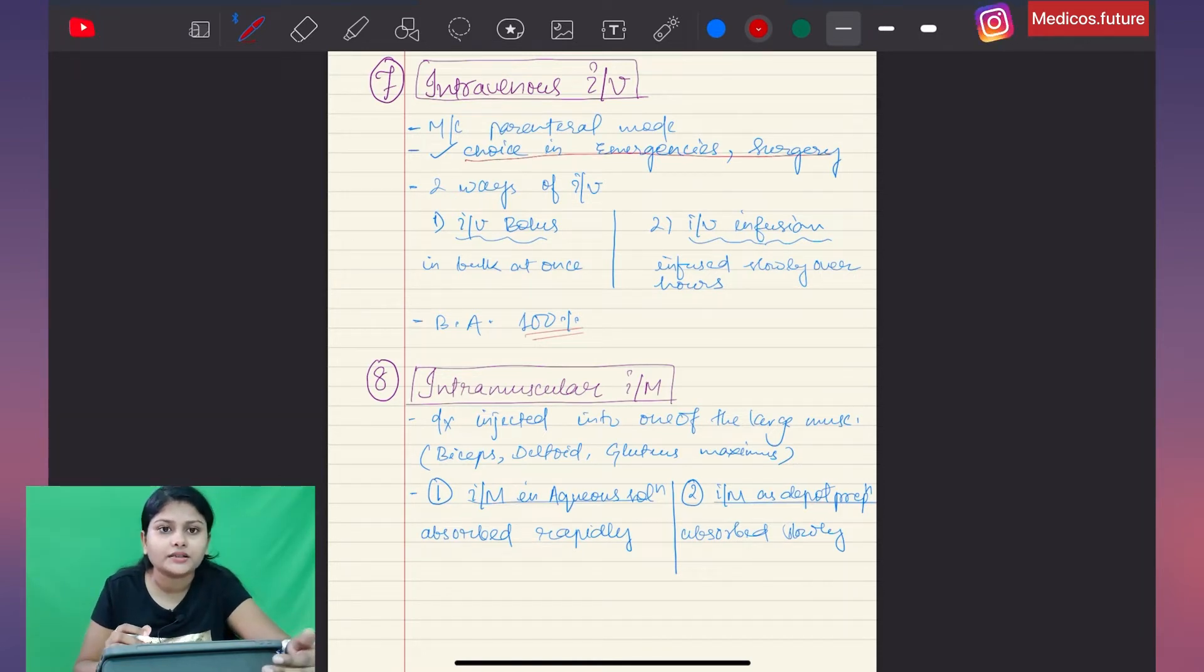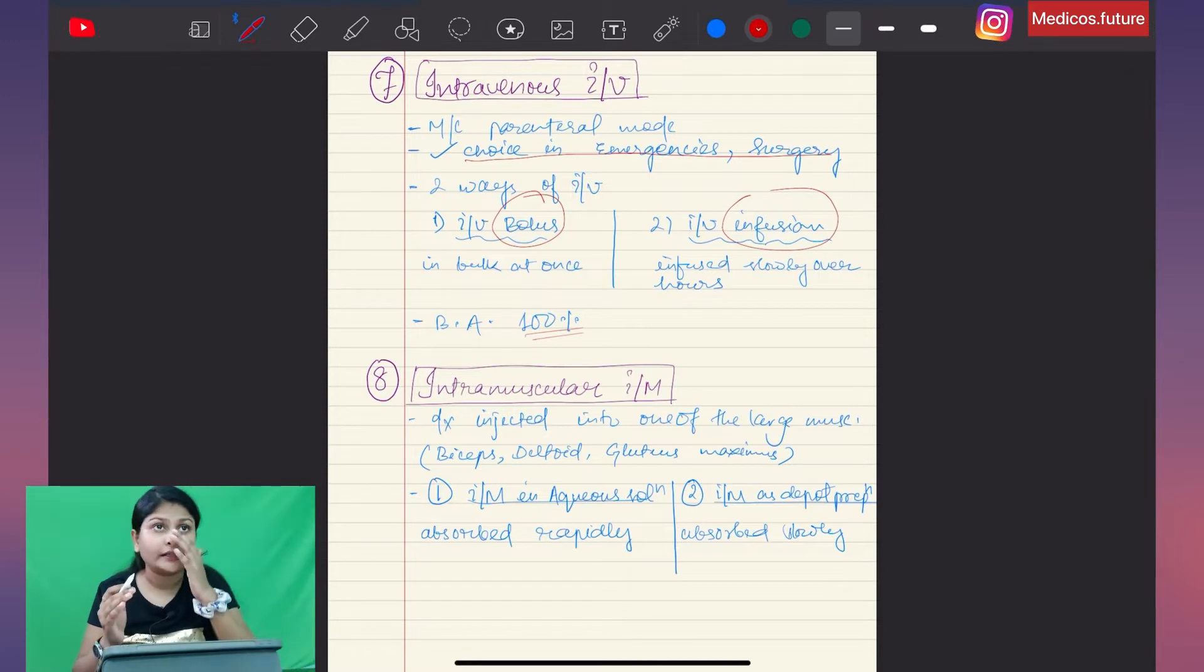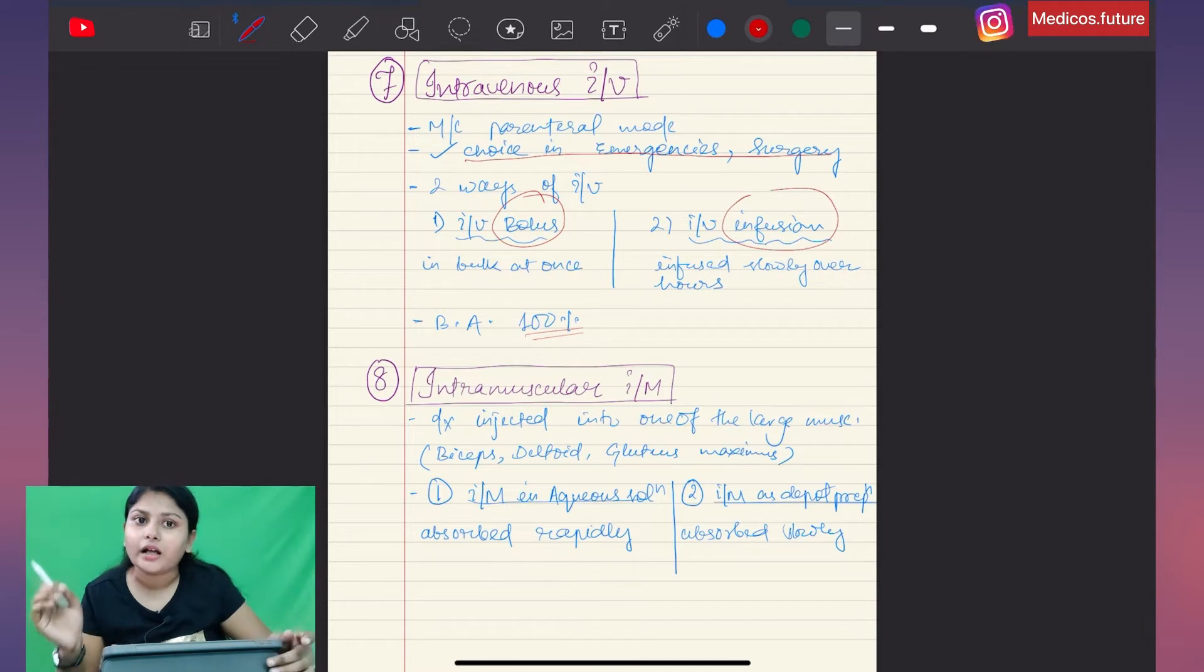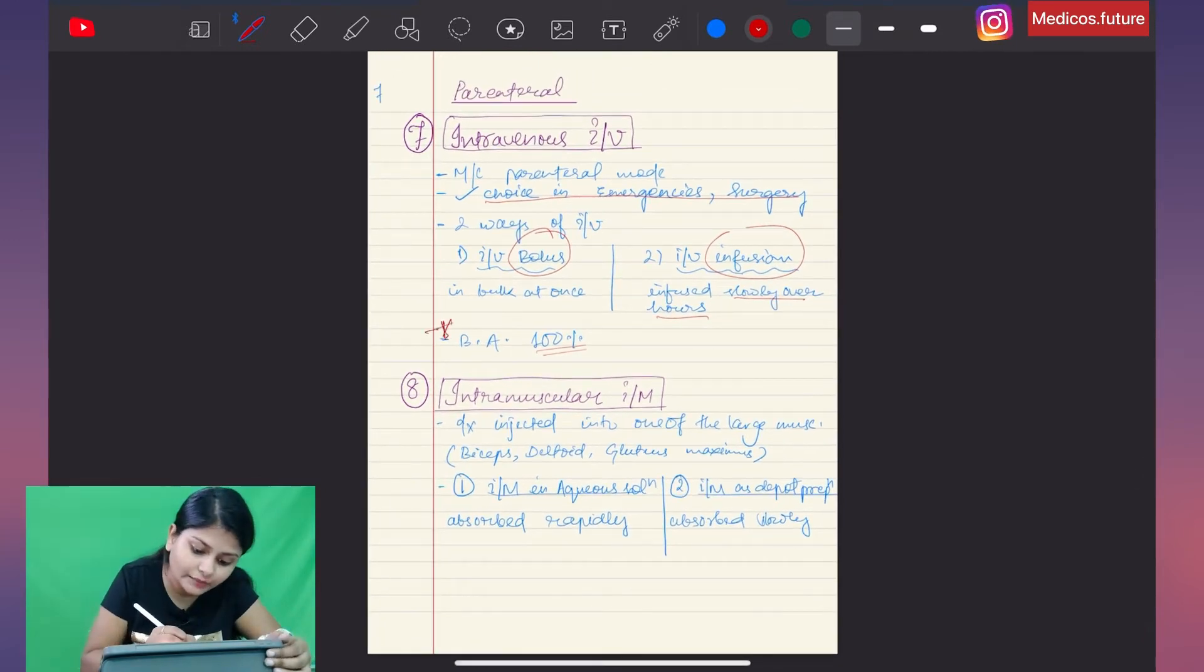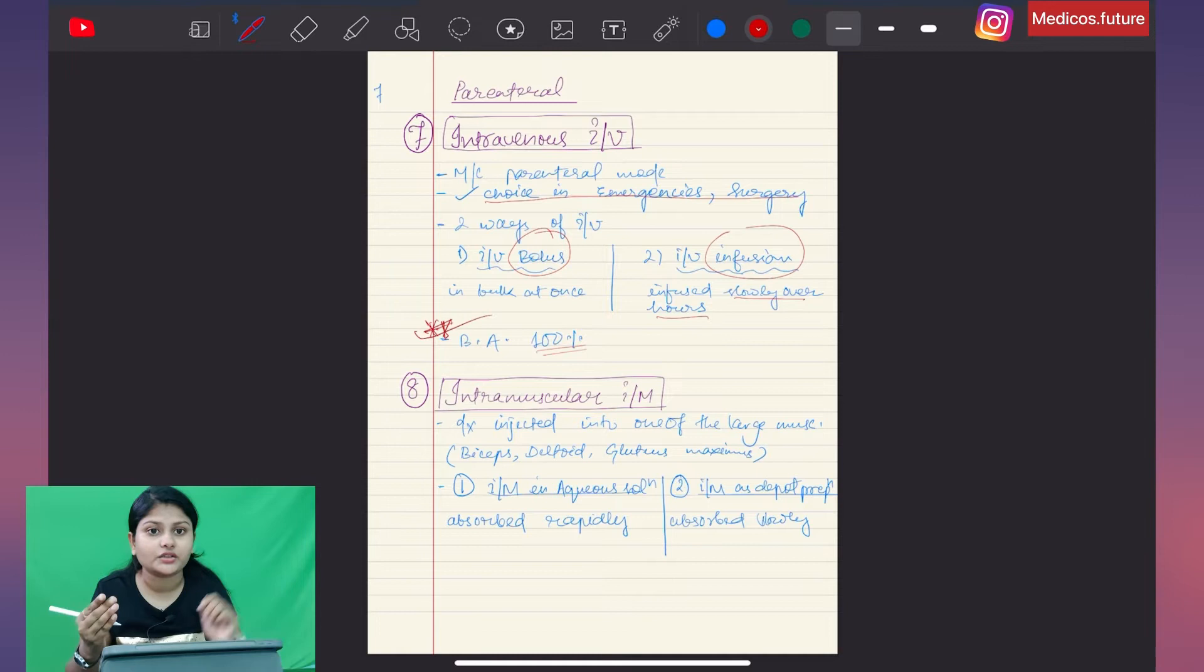In emergency conditions, surgery, or when the patient is unconscious, we can use IV mode. There are two ways of IV injection: IV bolus and IV infusion. IV bolus means you inject the drug in bulk for quick action. IV infusion means the drug is given slowly over hours through a drip. The most important thing about IV mode is that the bioavailability is 100%.